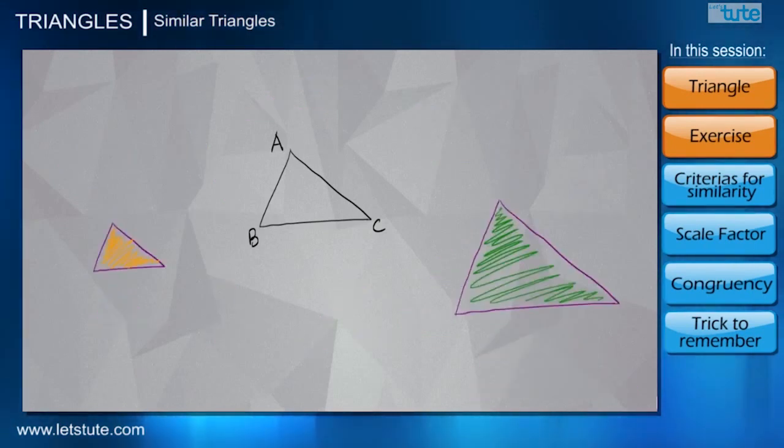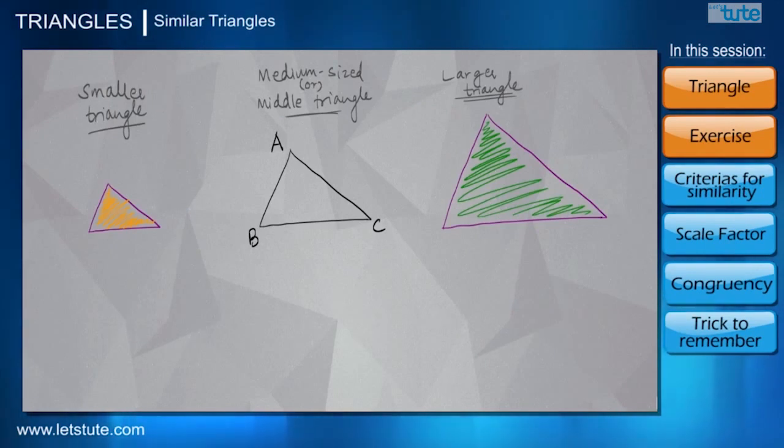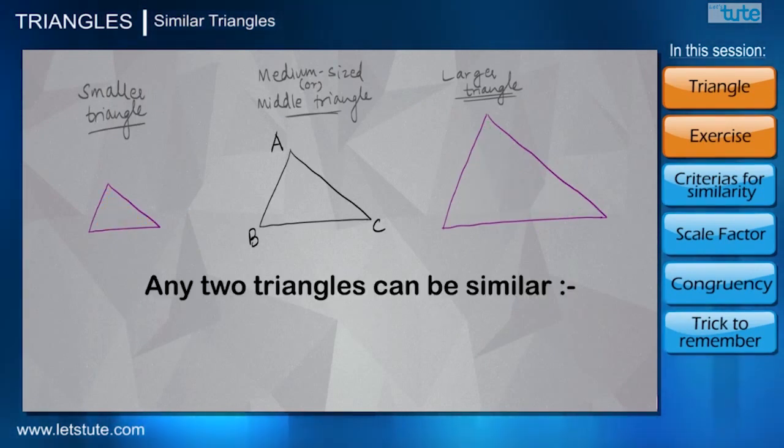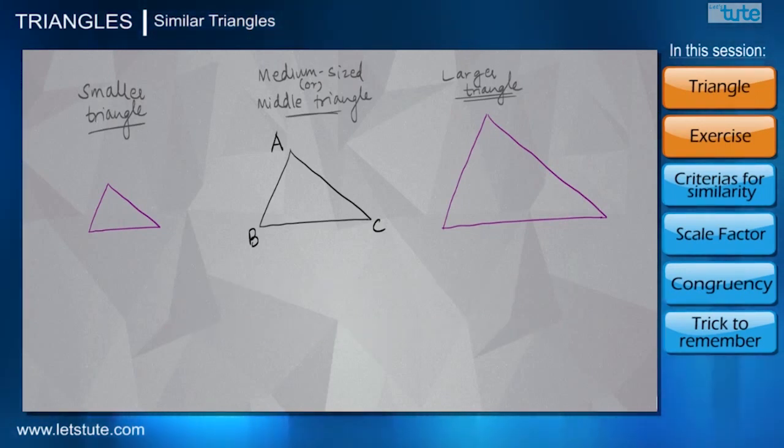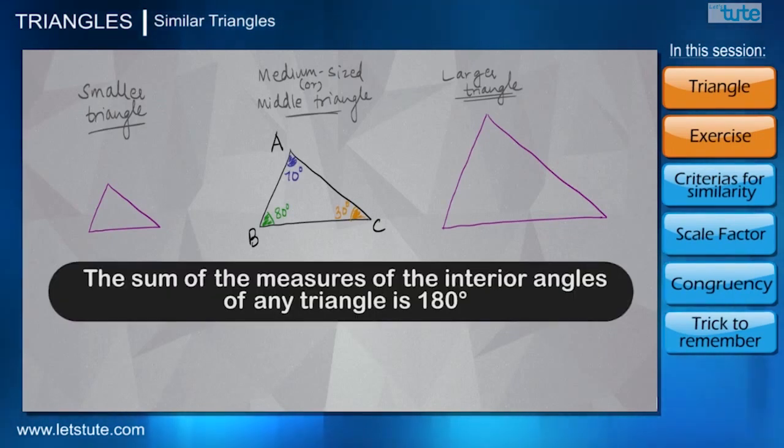Well, the reason is quite nicely given by geometry, which is a part of mathematics. It says we can call any two shapes or figures similar, particularly in case of these triangles on the screen, if their corresponding angles are the same. So let's say their angles are 70 degrees, 80 degrees, and 30 degrees.